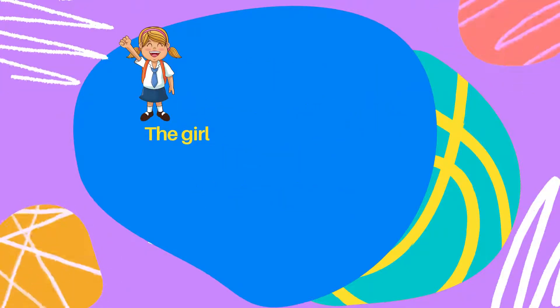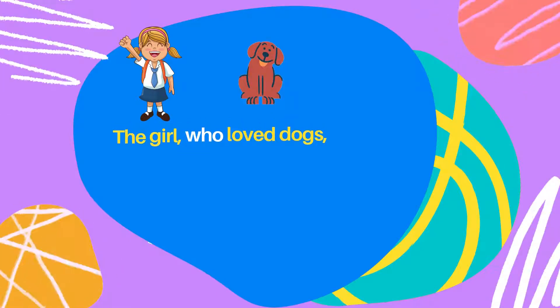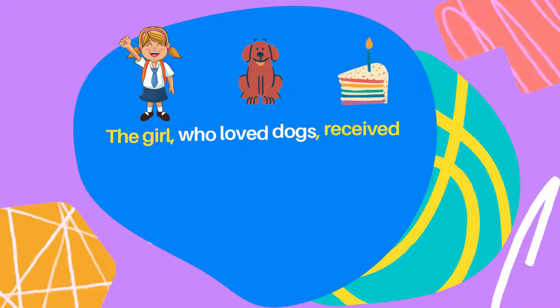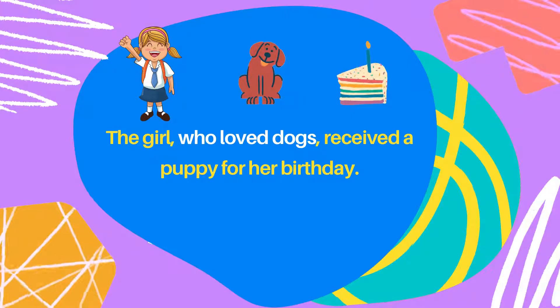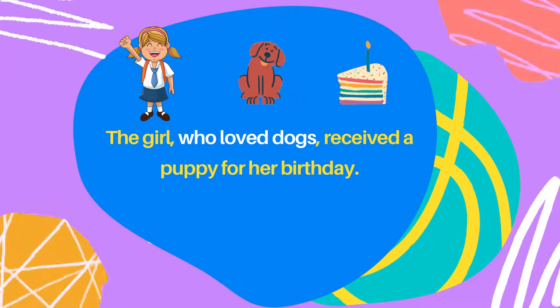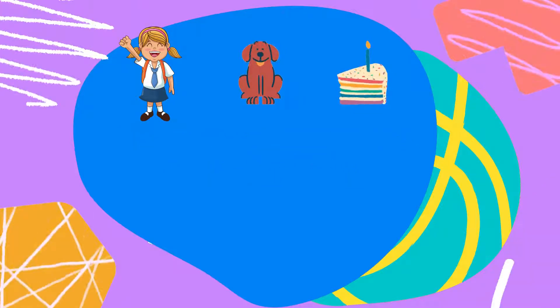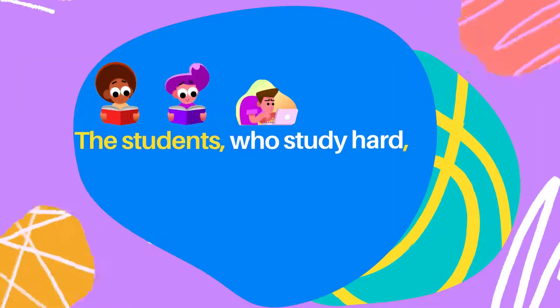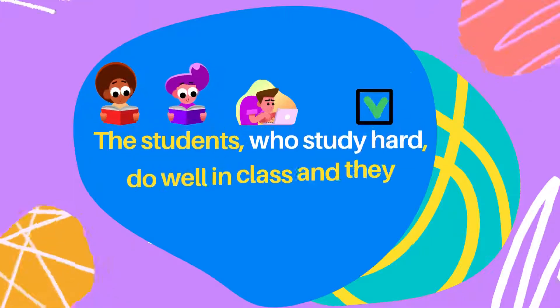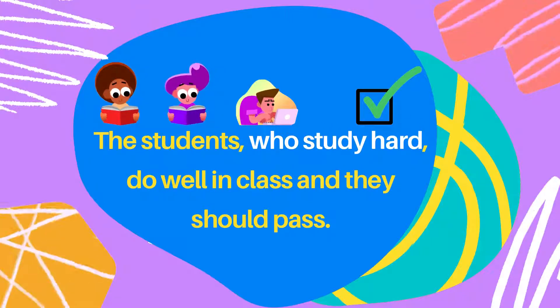The girl — tell me more — who loved dogs — finish the sentence — received a puppy for her birthday. Woohoo! Let's do one more. The students — tell me more — who study hard — finish the sentence — do well in class.